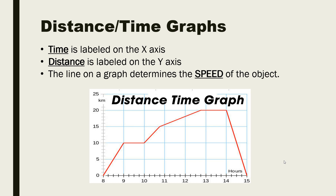Just like with the velocity-time graph, time is always on the x-axis and distance is always labeled on the y-axis. The line represents overall speed. Since we need distance and time to calculate speed, on a distance-time graph you can calculate speed at any given point — which is something you will have to do.